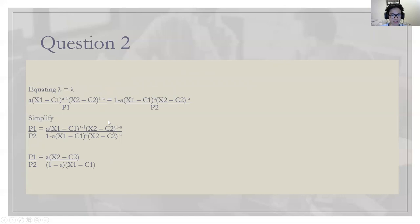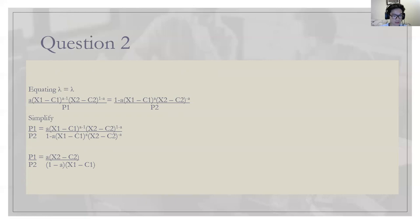Lastly, dL/dλ is essentially the constraint function set equal to zero. We equate lambda equals lambda, giving us this equation. By simple cross multiplication, p1/p2 equals a*(x1 minus c1) to the power of a minus one times (x2 minus c2) to the power of one minus a, over one minus a times (x1 minus c1) to the power of a times (x2 minus c2) to the power of negative a. Using simple indices, this simplifies to p1/p2 equals a*(x2 minus c2) divided by (1 minus a)*(x1 minus c1). There are two approaches; I will solve for x2 since it is easier.